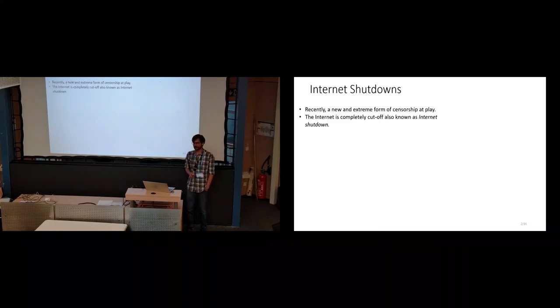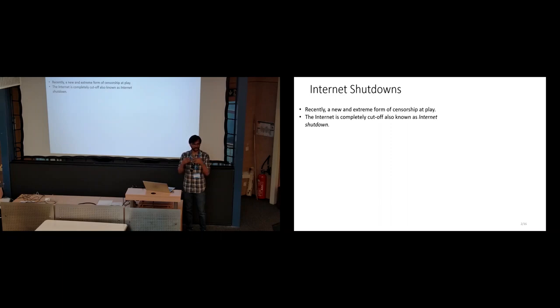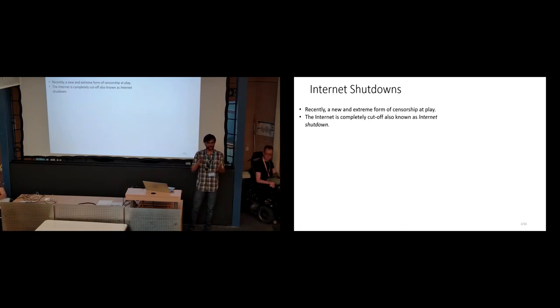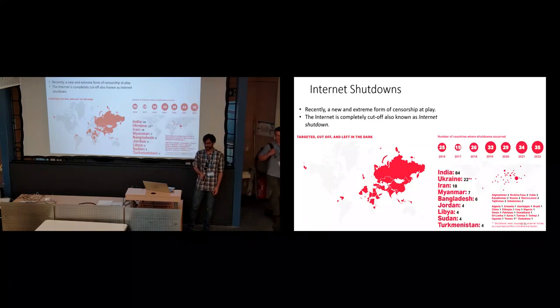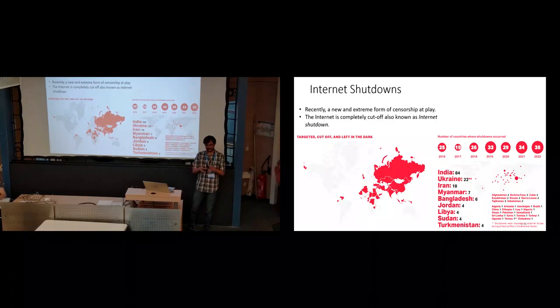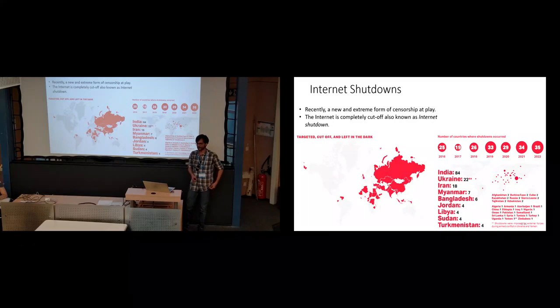When we talk about shutdowns, they are a relatively new phenomenon and an extreme form of censorship in which the internet is completely cut off in a particular region, mobile broadband alike. As you can see from this graph, it's quite prevalent. A lot of countries are actually doing internet shutdowns of varying duration. And the number of countries performing shutdowns is also increasing. In 2016, there were 25, but now we have more countries that do this.